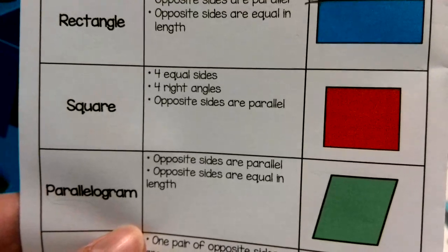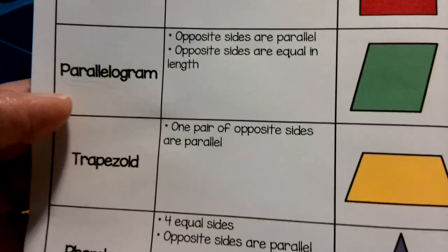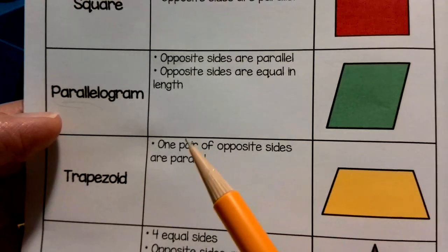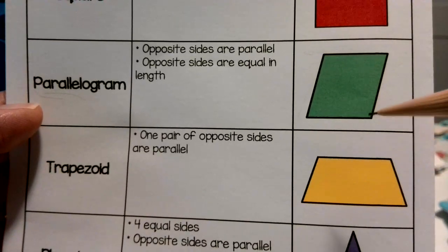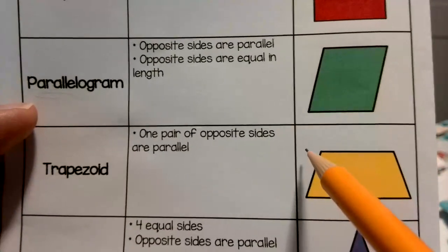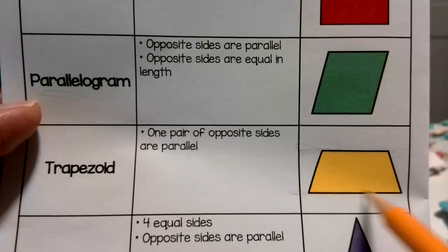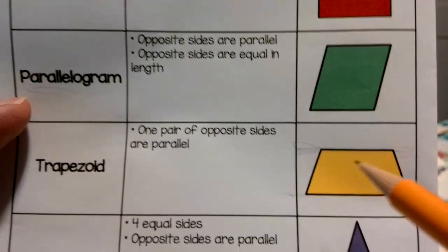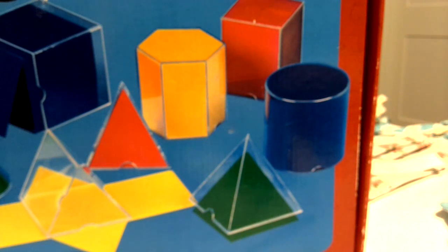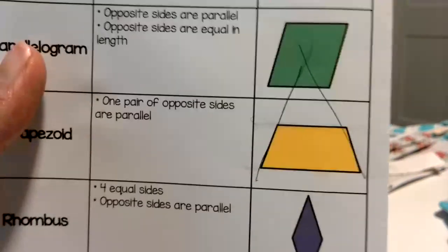The next quadrilateral is a trapezoid. It has only one pair of opposite sides that are parallel. Here is a perfect line going left and right, and here's its opposite — they run parallel. But the lines on the sides will eventually cross, like that. You don't want your train to do that because again they will derail. So those sides are not parallel.